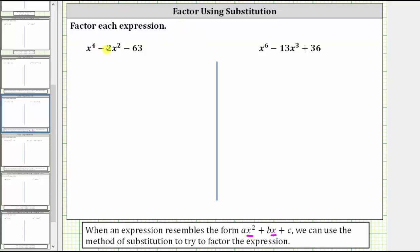Looking at the first expression, we have x to the fourth minus two x squared minus 63. Notice the variable factor of the middle term is x squared. If we square x squared, we need to get the variable factor of the first term, which is x to the fourth. Let's write the expression as x squared, squared, and see if we get the variable factor of the first term — which we do. Remember, when we have powers raised to powers, we multiply the exponents. Writing the expression in this form is a way to verify it's the correct form, and it also sets it up to perform the substitution.